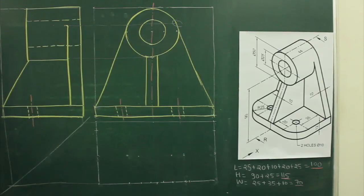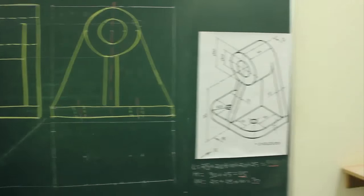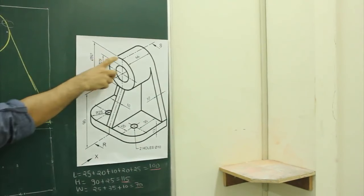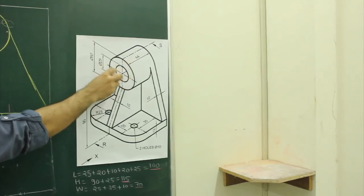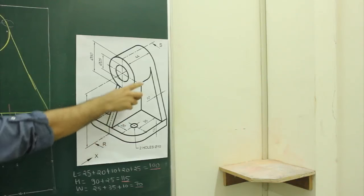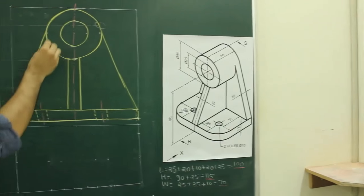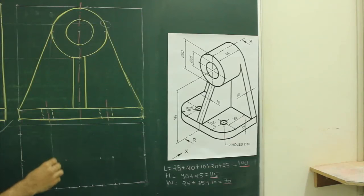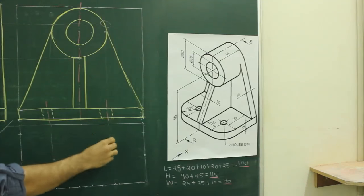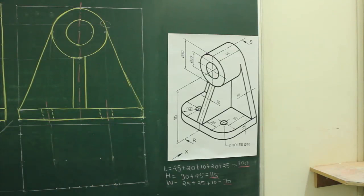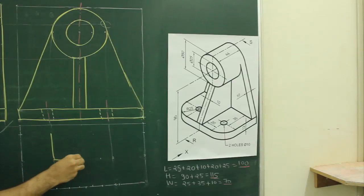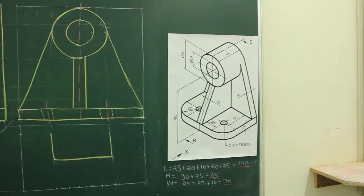Now we need to draw the top view. When you see from the top, you will see this rectangle of 44 by 50, this slope, these two slopes, and the base plate. So we will project from here — it is given 44, so I can project till here. They have given the rib also, so that I can project from here.